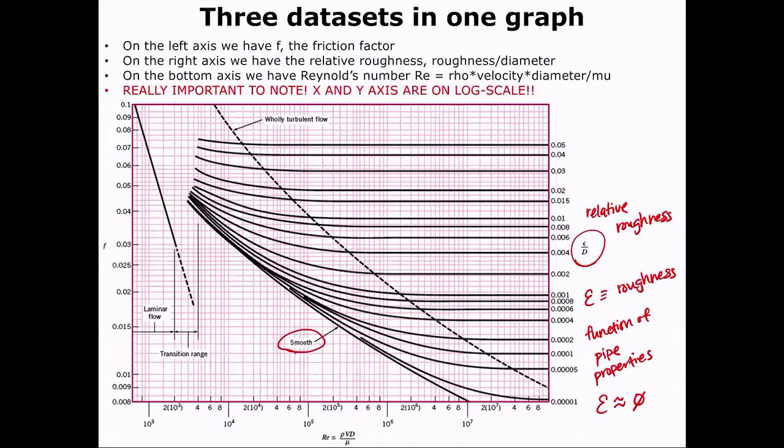If you have a very, very rough pipe, you could have an epsilon of 0.002 inches, for instance, or 0.0003 meters. So it's usually in units of depth, and those are all provided in a table for you.